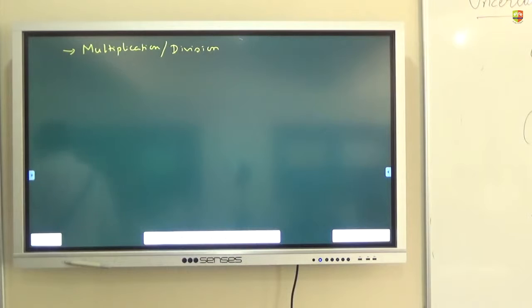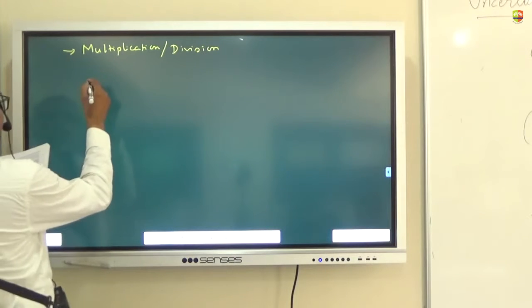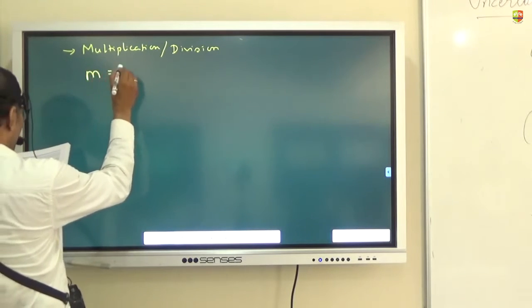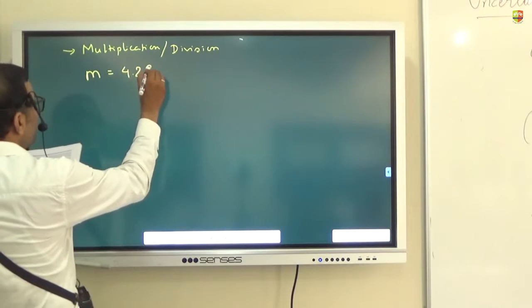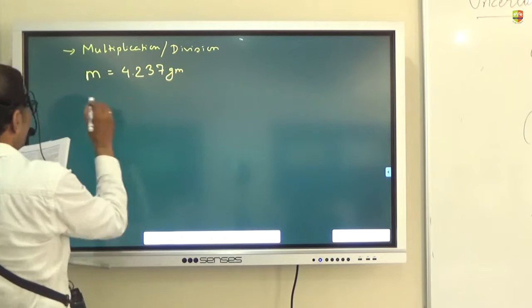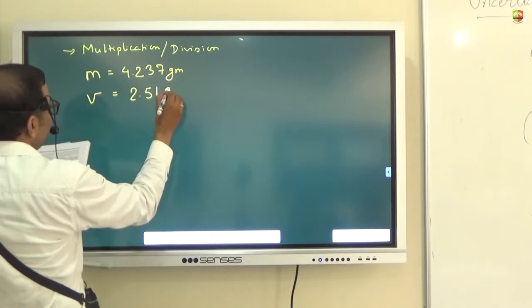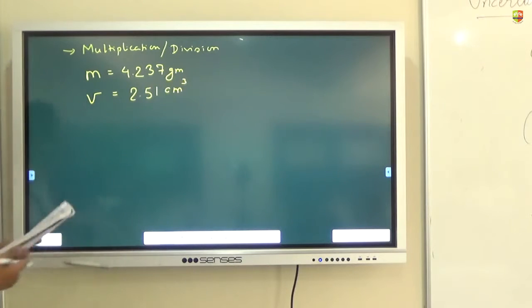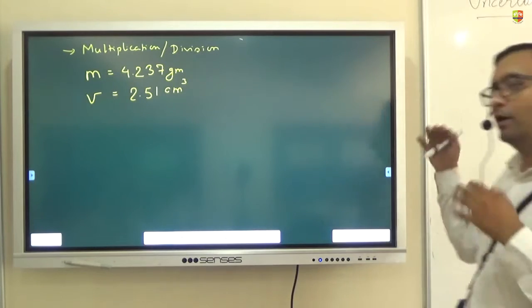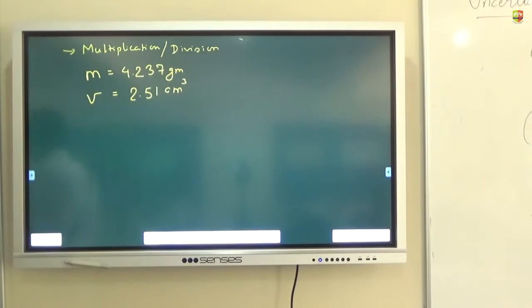So let's take one example. You have to find the density of a substance whose mass is—don't use calculator though—4.237 gram, and it occupies a volume of 2.51 cm³. You need to find the density in gram per cm³. See, at times we have this habit that when we divide we keep on getting more and more different places and we keep on adding them. That should not matter. We have to stop where? Number of significant figures should be 3.